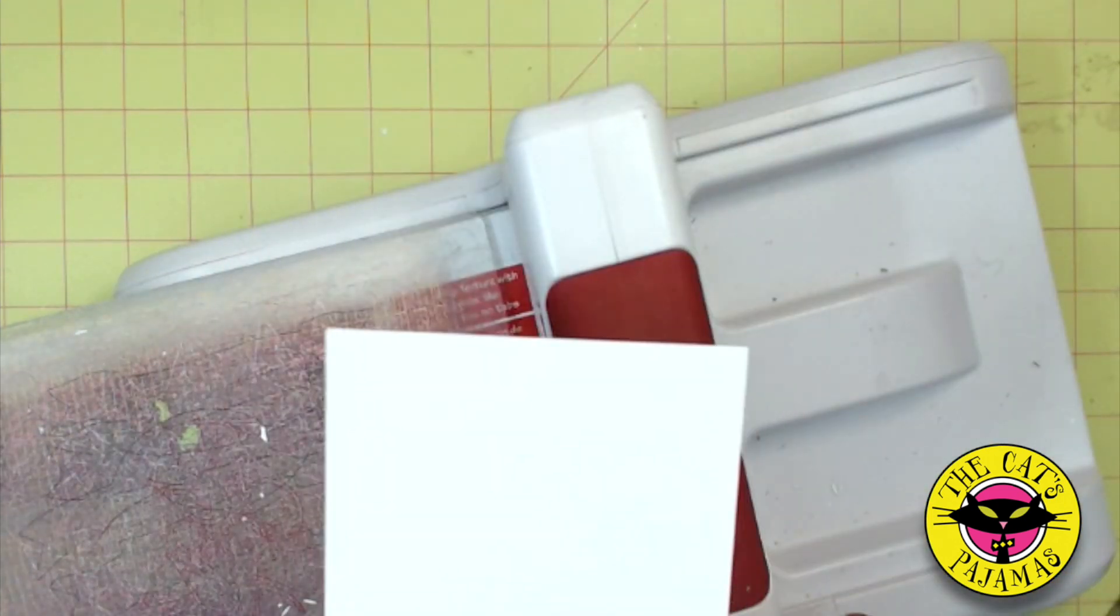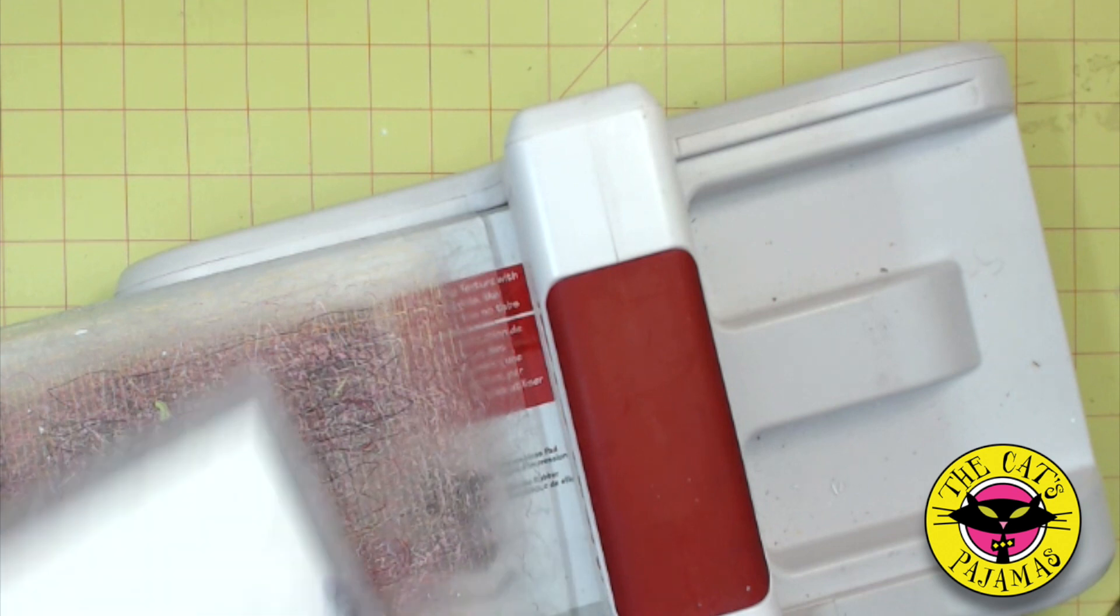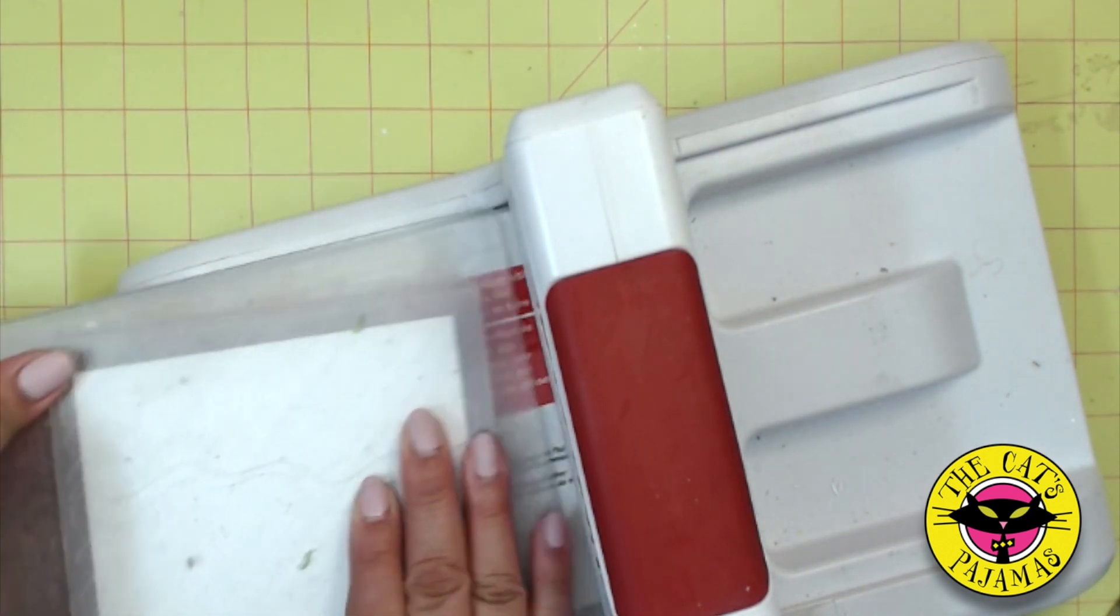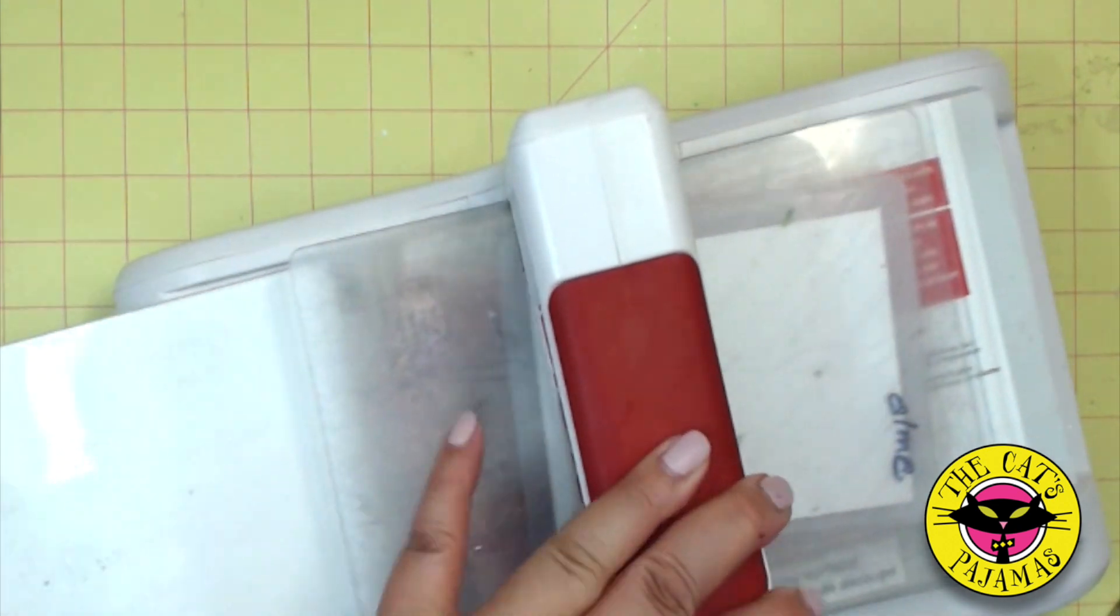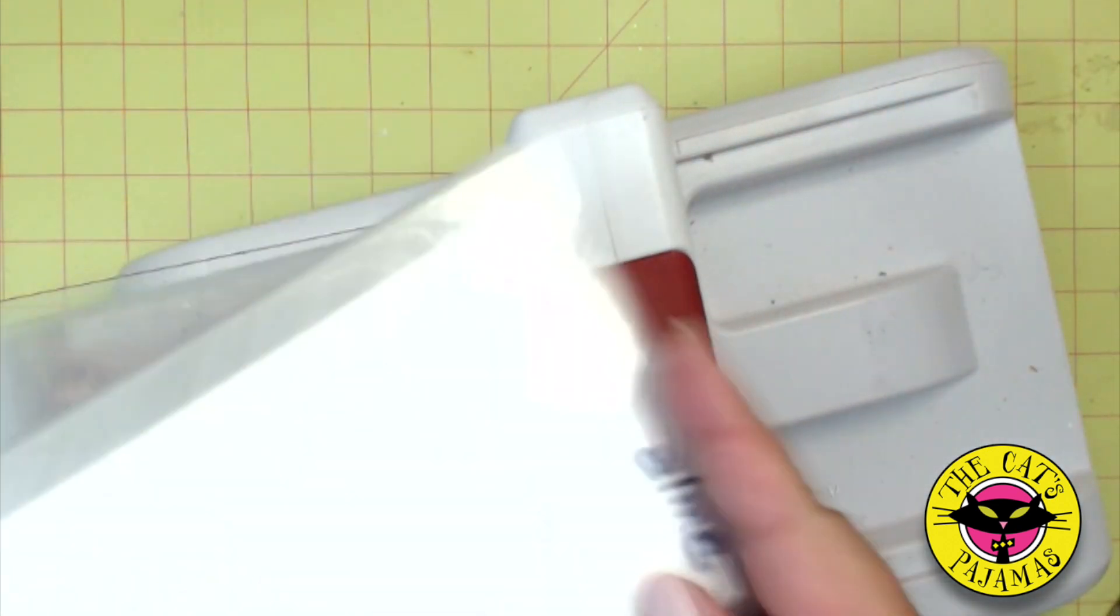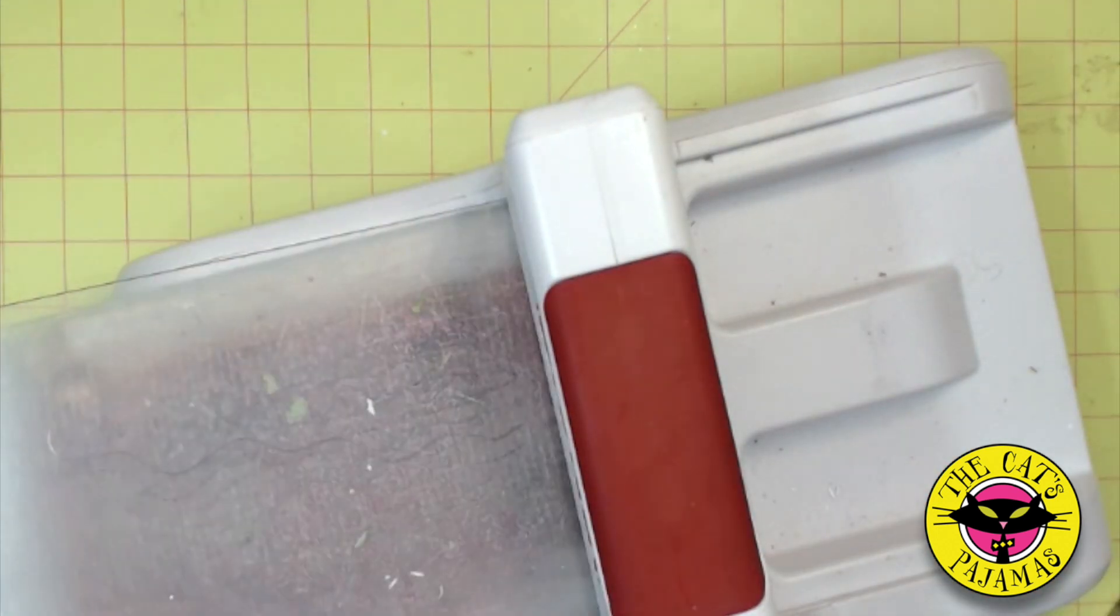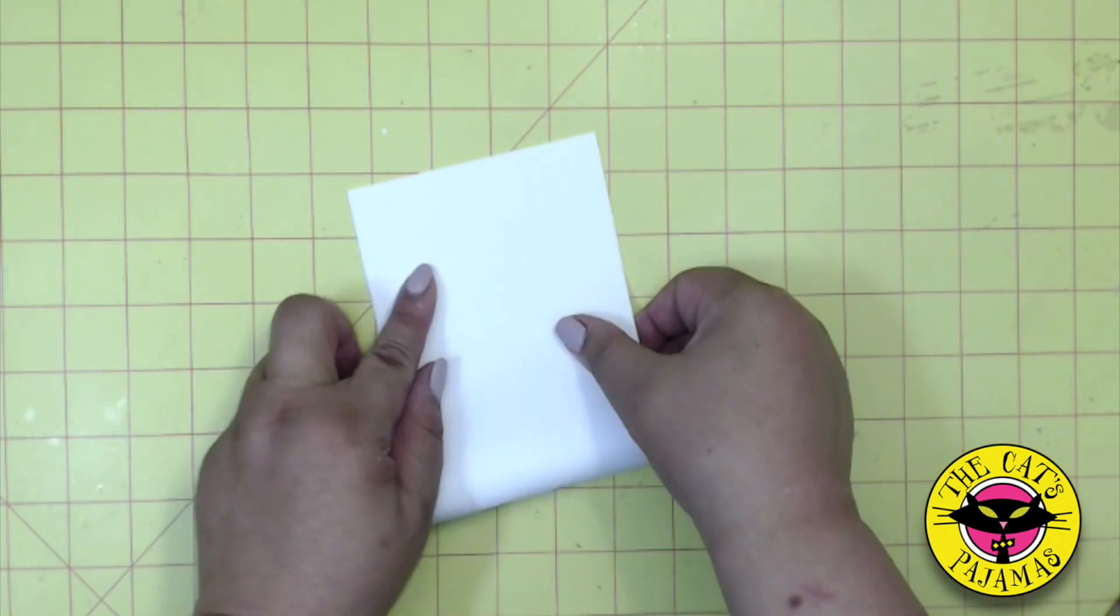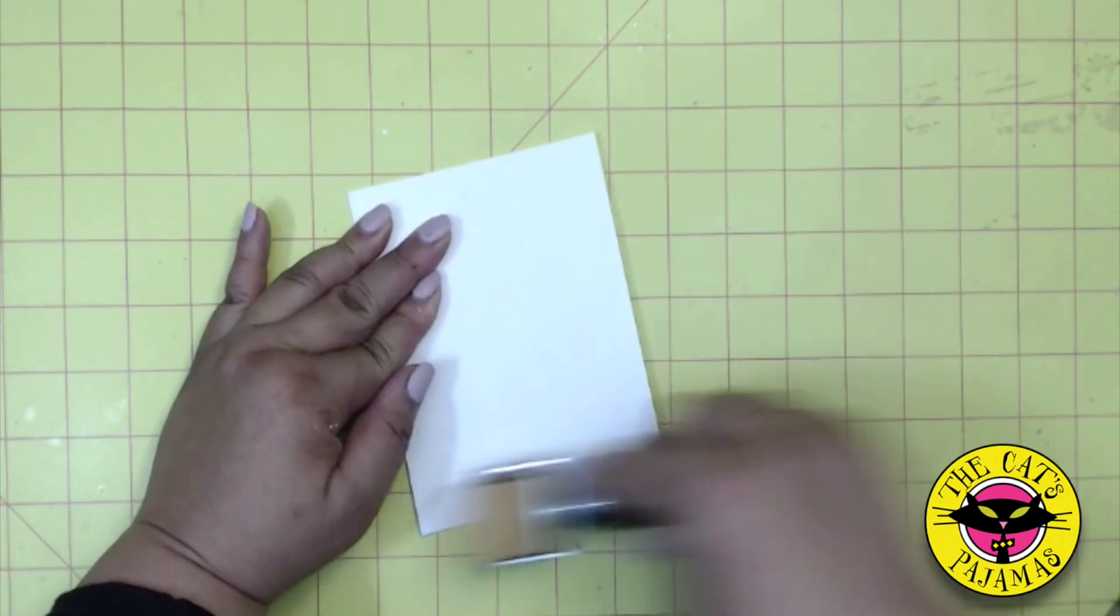Now for the rest of the card, take a 3 and 3 quarters by 5 inch piece of cardstock and emboss it using the striped embossing folder. I have a ton of folders, but I always come back to this one. It kind of looks like candy. The base of the card is 4 and a quarter by 11 inches folded in half.